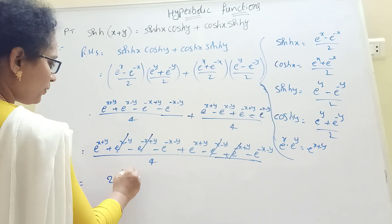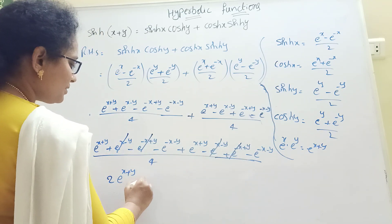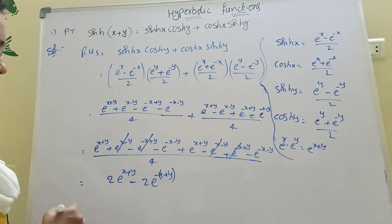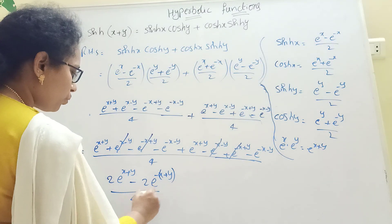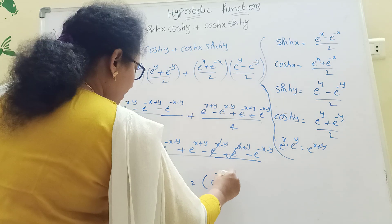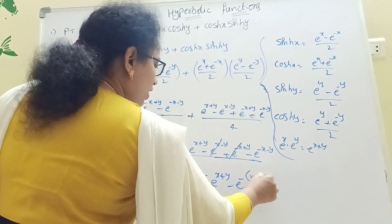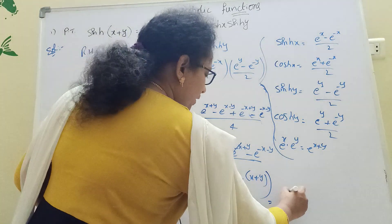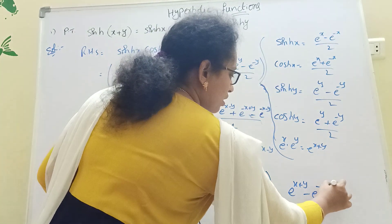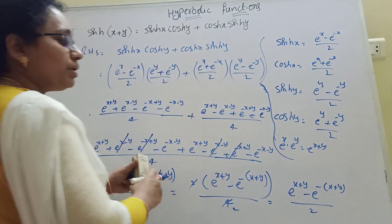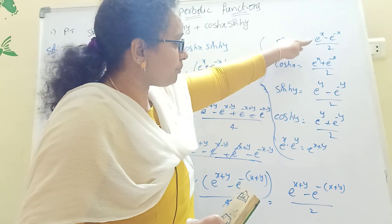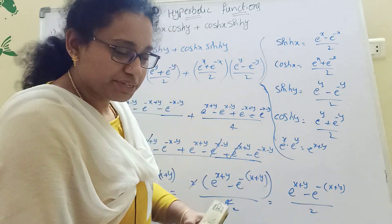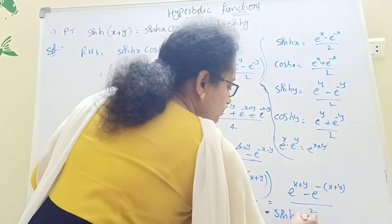After cancellation we have 2·e^(x+y) minus 2·e^(-(x+y)) by 4, which simplifies to e^(x+y) minus e^(-(x+y)) by 2. This is the formula for sinh(x+y), so that equals sinh(x+y).